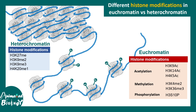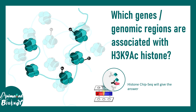So let's say one asks the question: which genes or genomic regions are associated with H3K9 acetylation, which is known to be an activatory mark associated with gene activation? The question is which genes in the genome are associated with this particular modification. We are trying to understand a global scenario, and that is why histone ChIP-seq will give us the answer. Let's find out how.